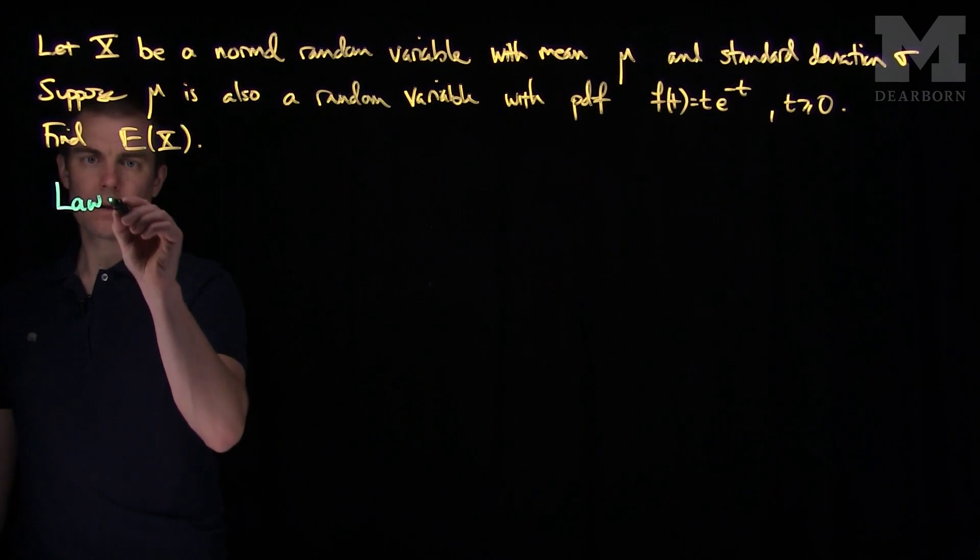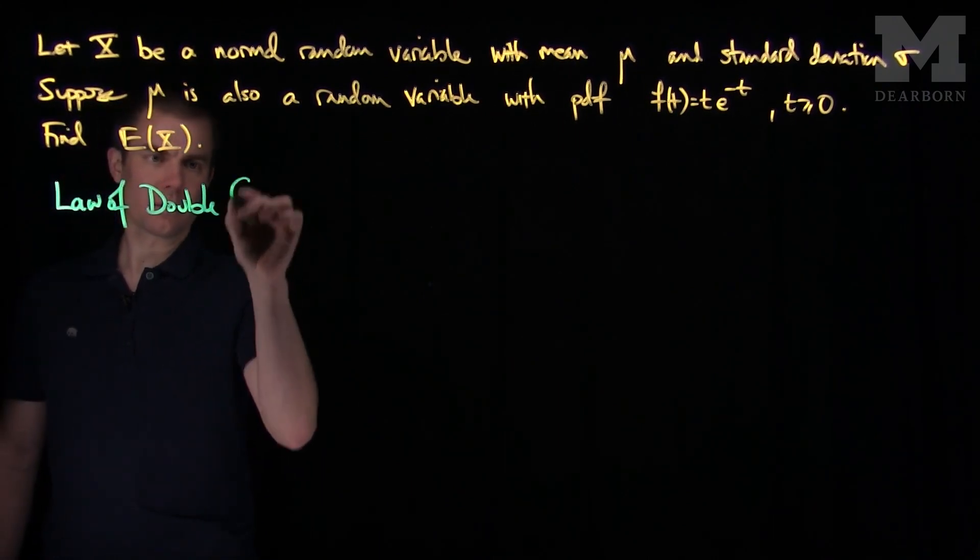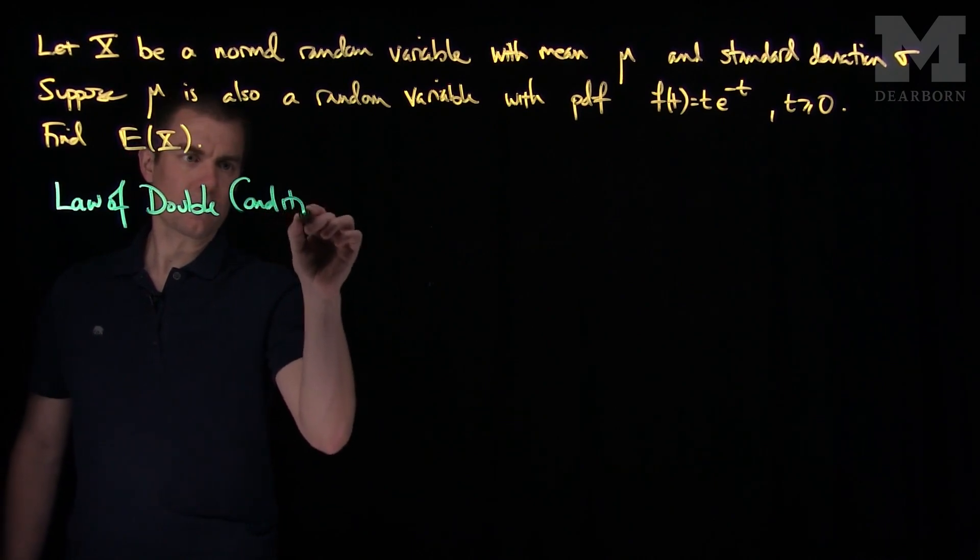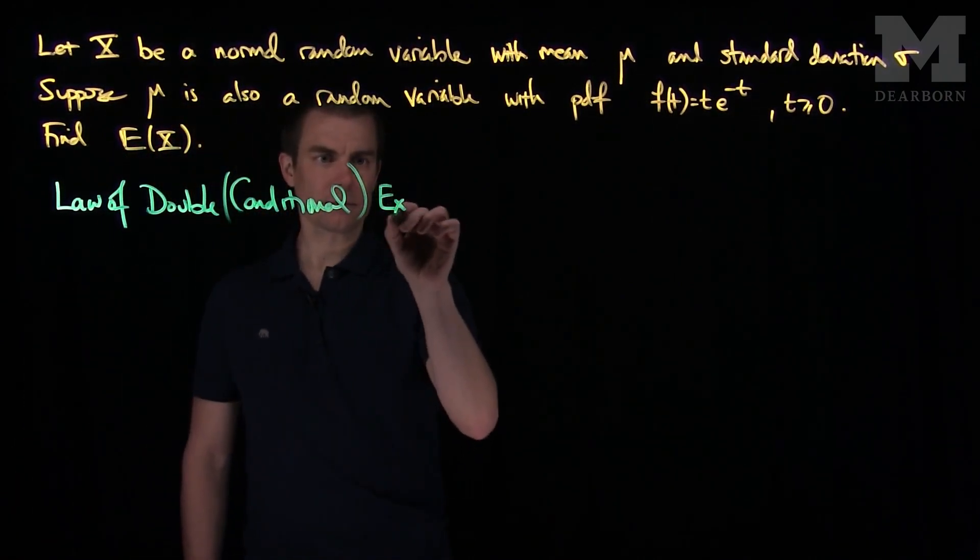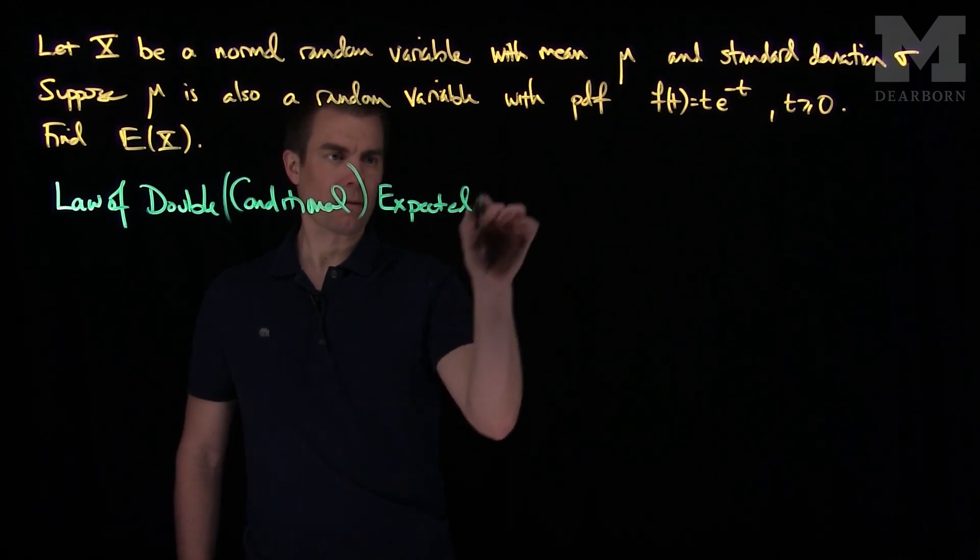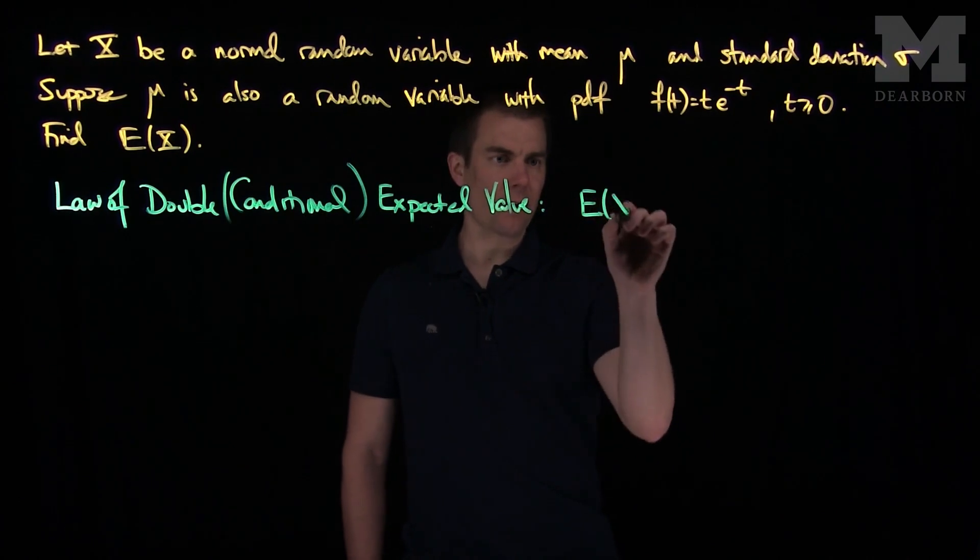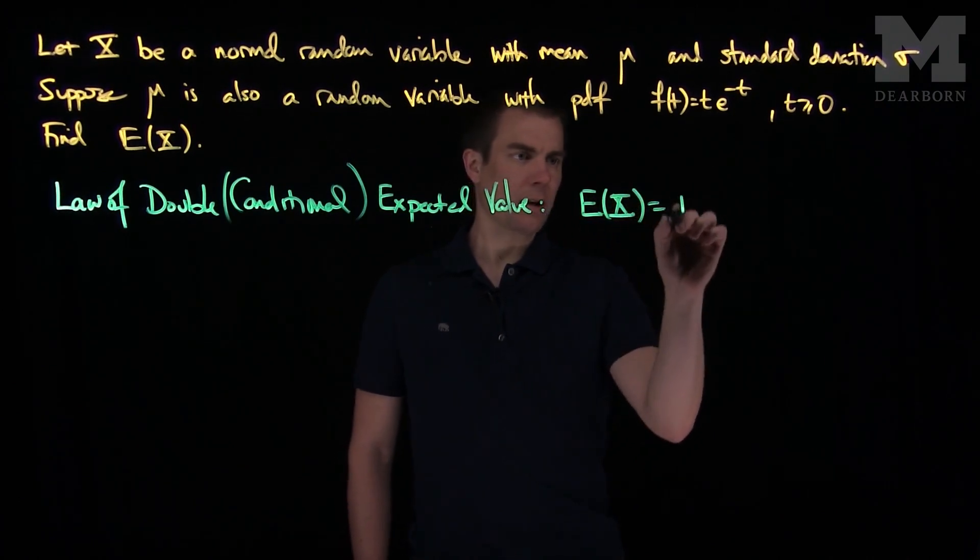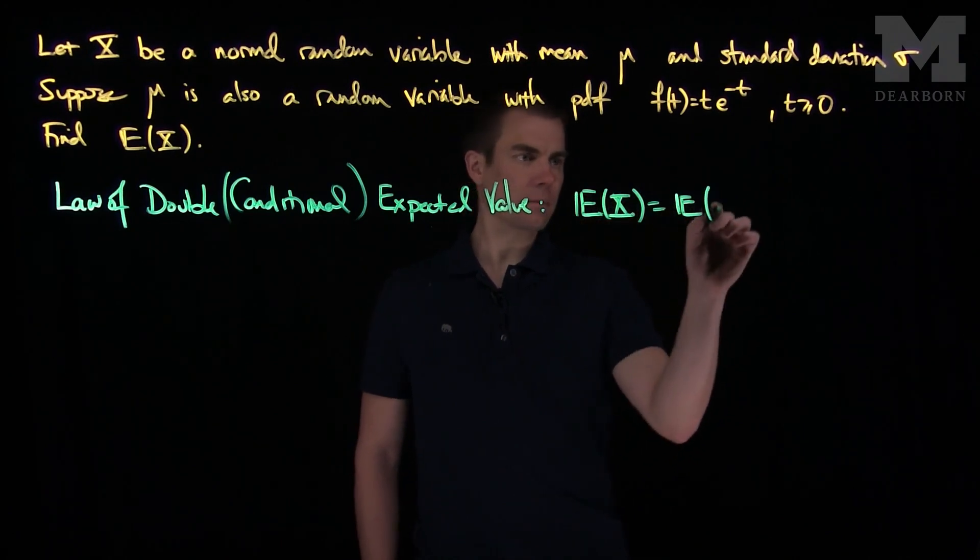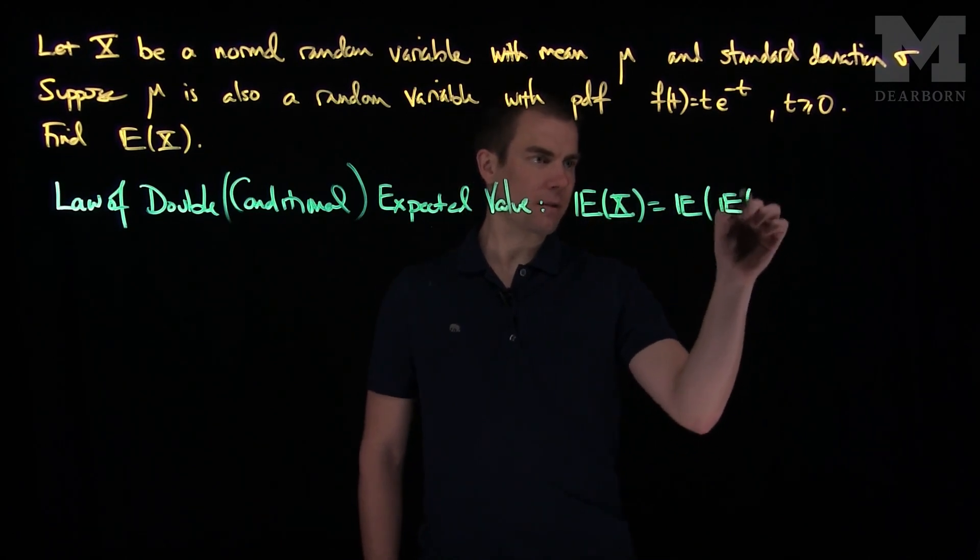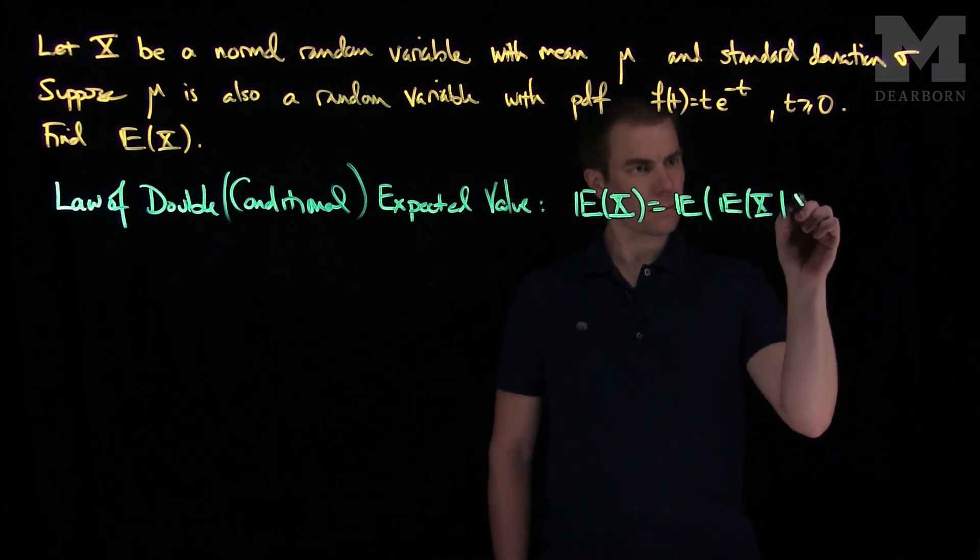So the law of double or conditional expected value states that the expected value of a random variable X is the expected value of the conditional expected value of X given a parameter Y.